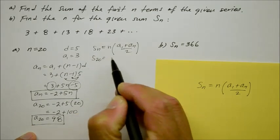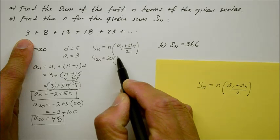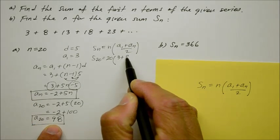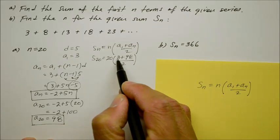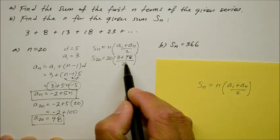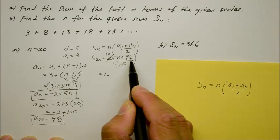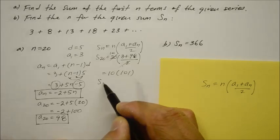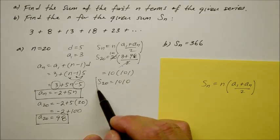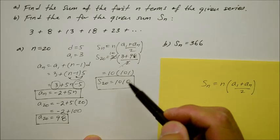So s of 20 is equal to 20 times the mean of the first of the series, which is 3, plus a sub n. And a sub 20 is 98, so we put 98 there — the average of those two. The denominator 2 reduces the coefficient 20 to 10 times. So we get 10 times the quantity 3 plus 98, which is 10 times 101, which equals 1010. The total sum of the first 20 terms is 1010.